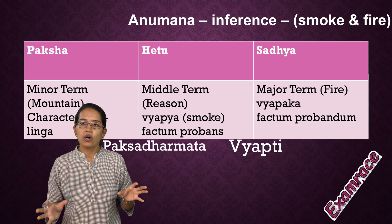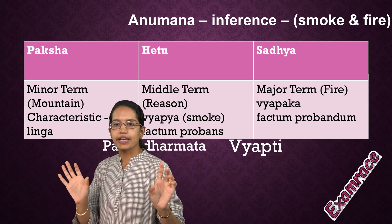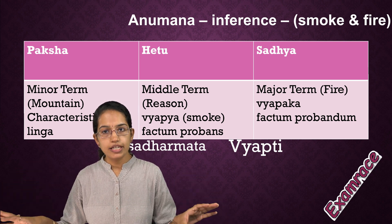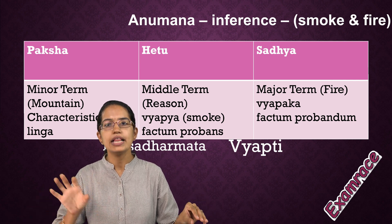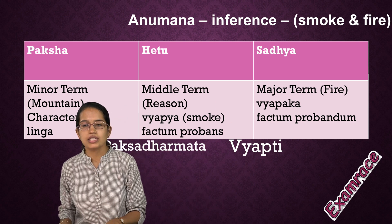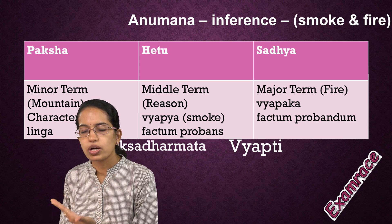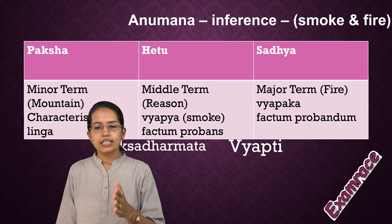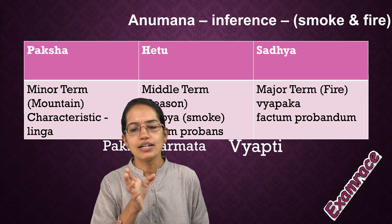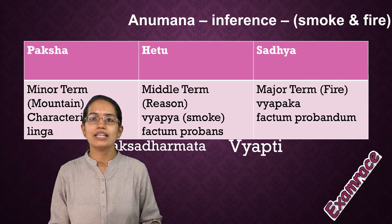Now we have Anumana, or inference. Whenever there is smoke, there is fire — that's the statement to remember for understanding Anumana. A simple diagram helps you understand: you have Paksha, Hetu, and Sadhya — the minor term, middle term, and major term, similar to Greek philosophy. The minor term is Paksha, which is the mountain. Hetu is the reason — the middle term — and that is the smoke. The major term is Sadhya, also called Vyapaka. The middle term is known as Vyapya. The relation between Hetu and Sadhya is known as Vyapti. Whenever there is an error in the Vyapti, it is known as Hetvabhasa. The relation between Paksha and Hetu is explained as Pakshadharmataa, and the relation between Paksha and Sadhya is explained as Paramarsha.